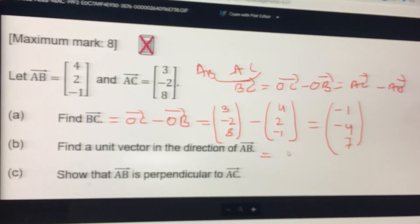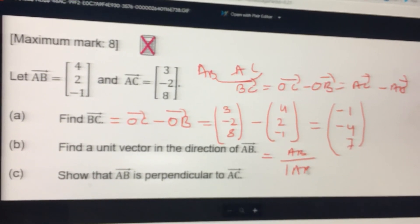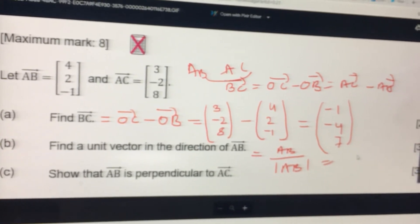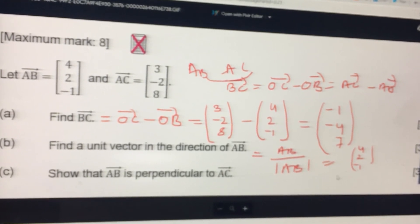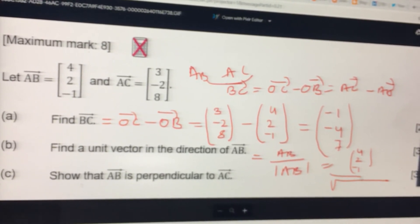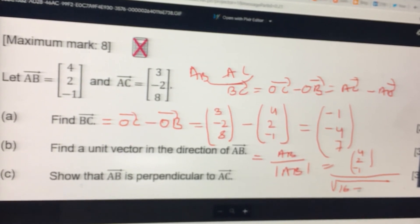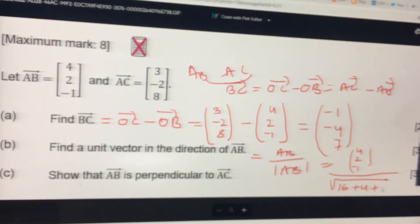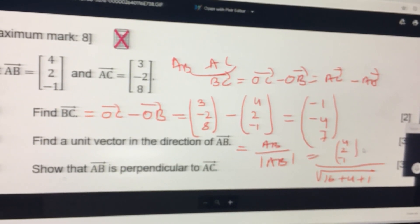...AB divided by modulus of AB. So [4, 2, -1] divided by modulus of that. So, 16 plus 4 plus 1. How much? So...